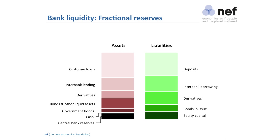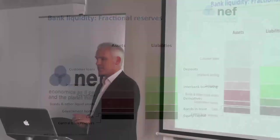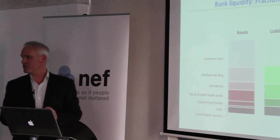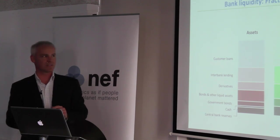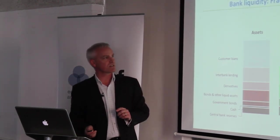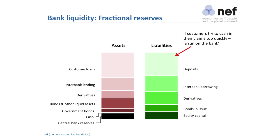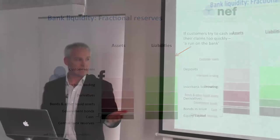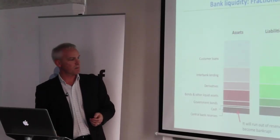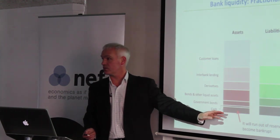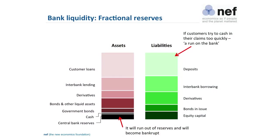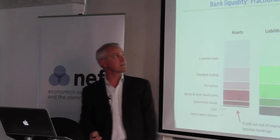This next part is for the benefit of any financial journalist in the room who unbelievably always seems to confuse these two concepts. First, fractional reserve: if customers try to cash in their claims too quickly — they want to withdraw their deposits, as happened with Northern Rock — and the bank hasn't got enough central bank reserves to settle its payments flying out to other banks, with no one willing to lend to it and the Bank of England not stepping in, you've got a bank that's run out of reserves. That's a liquidity crisis — it can't meet short-term claims on it.